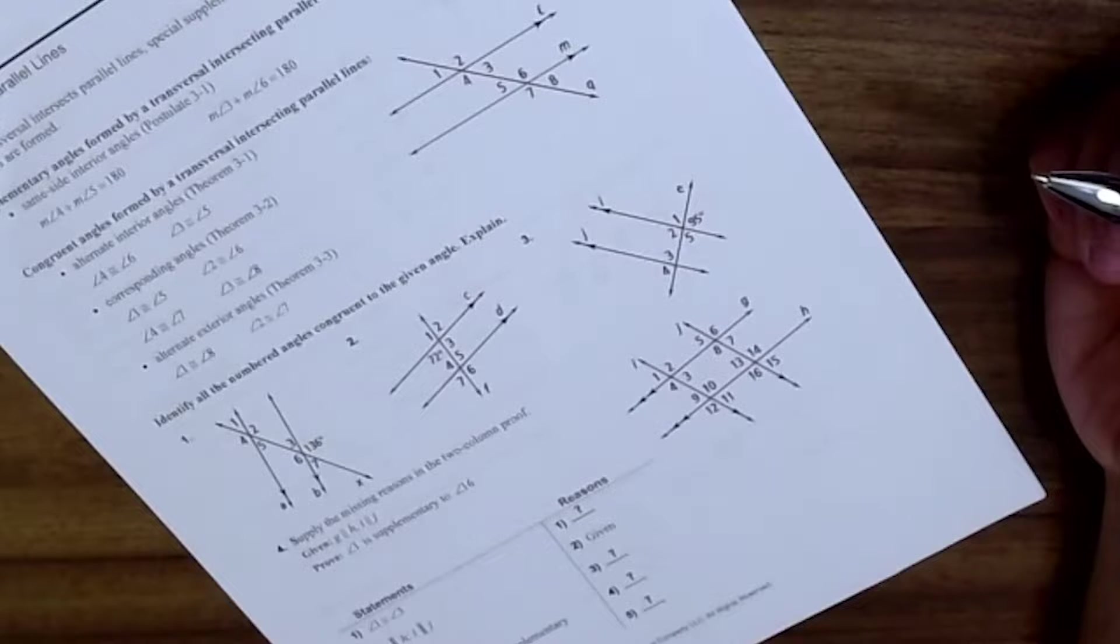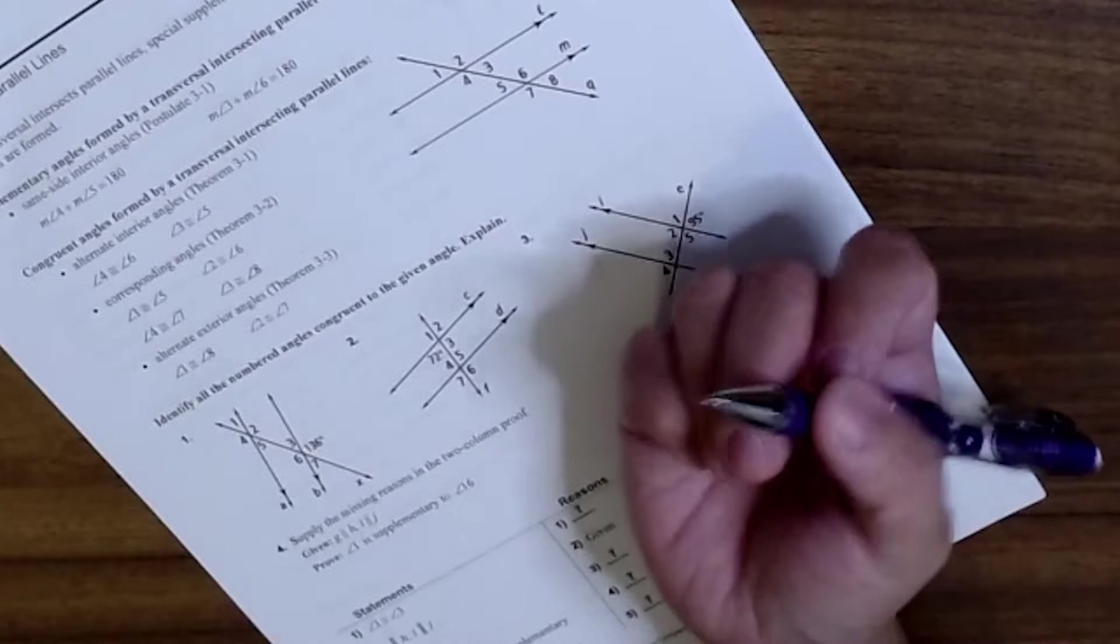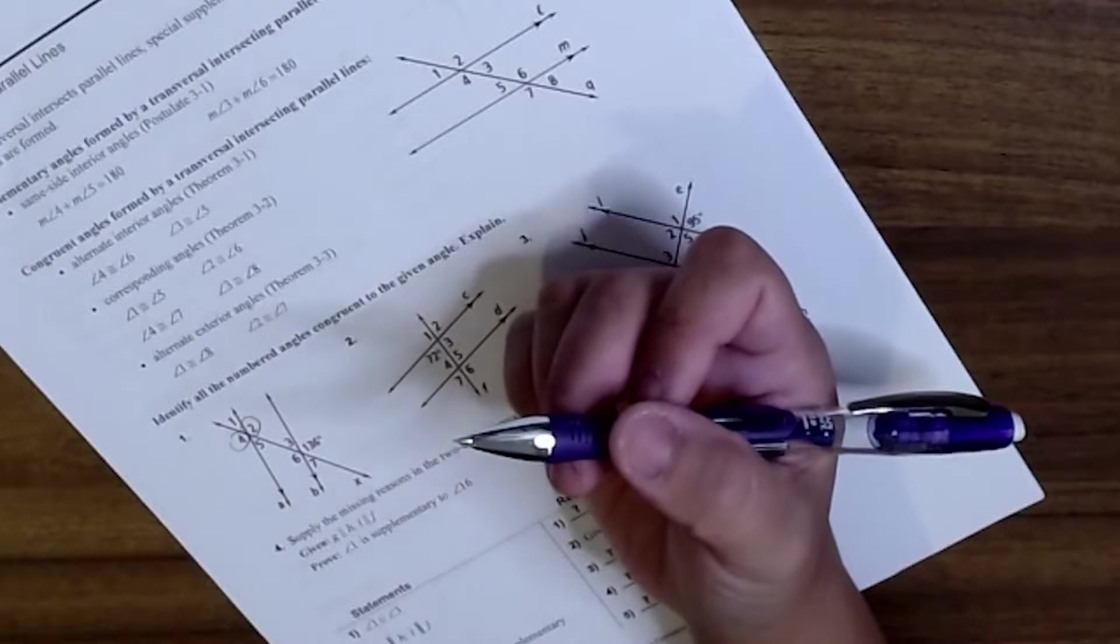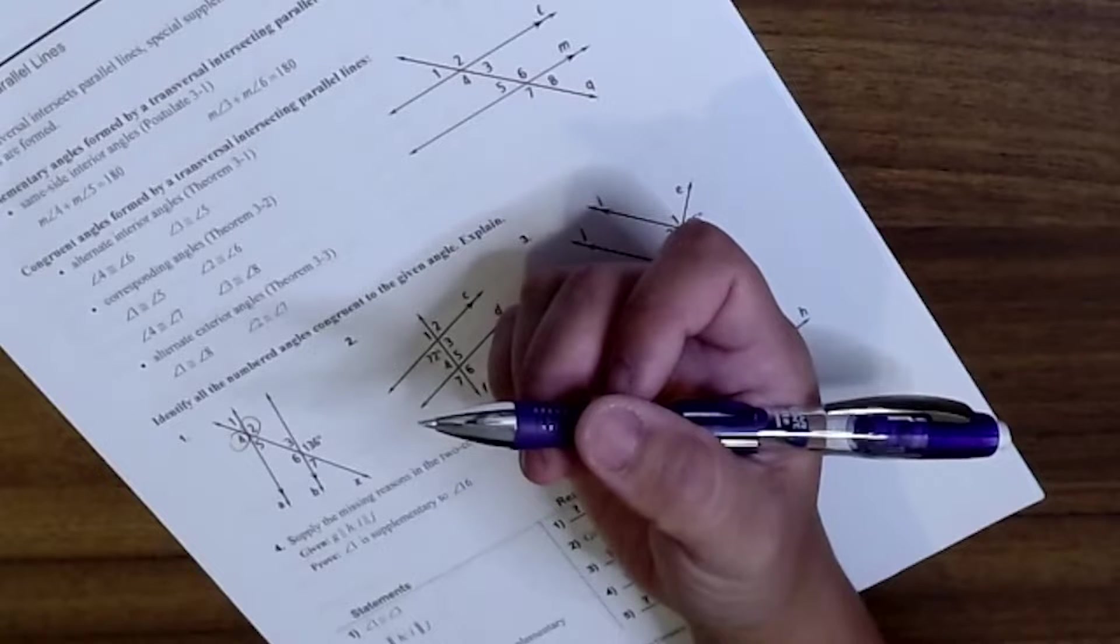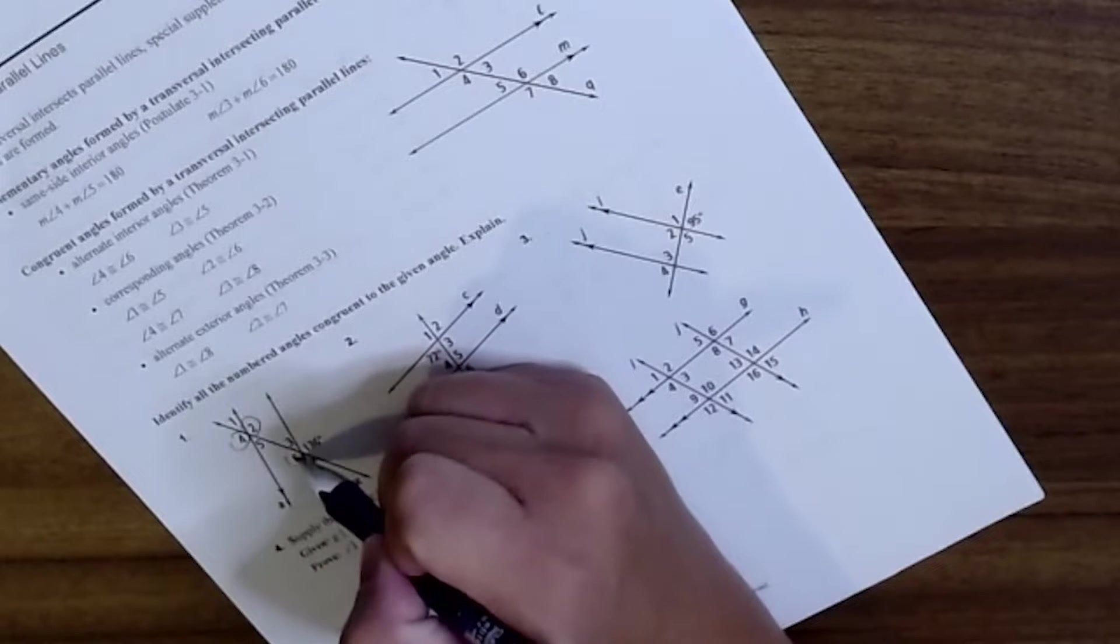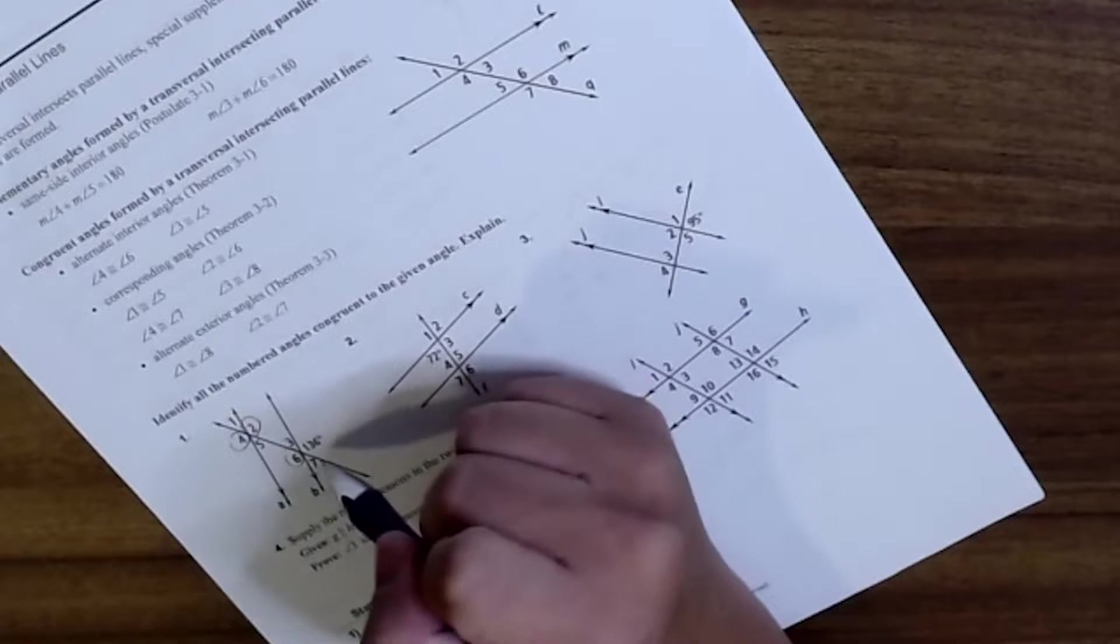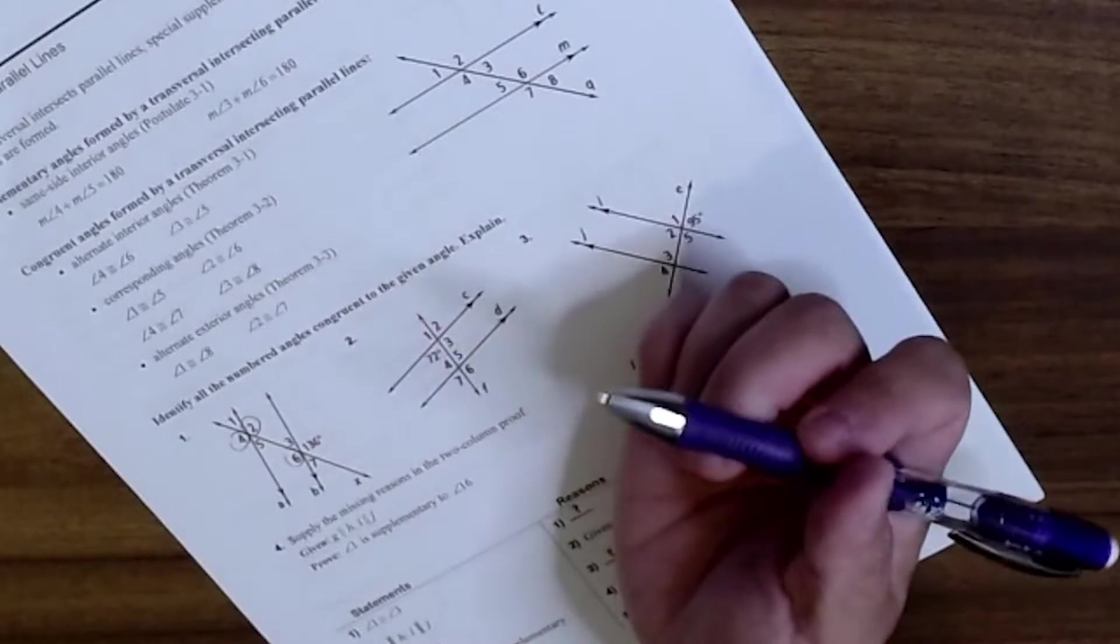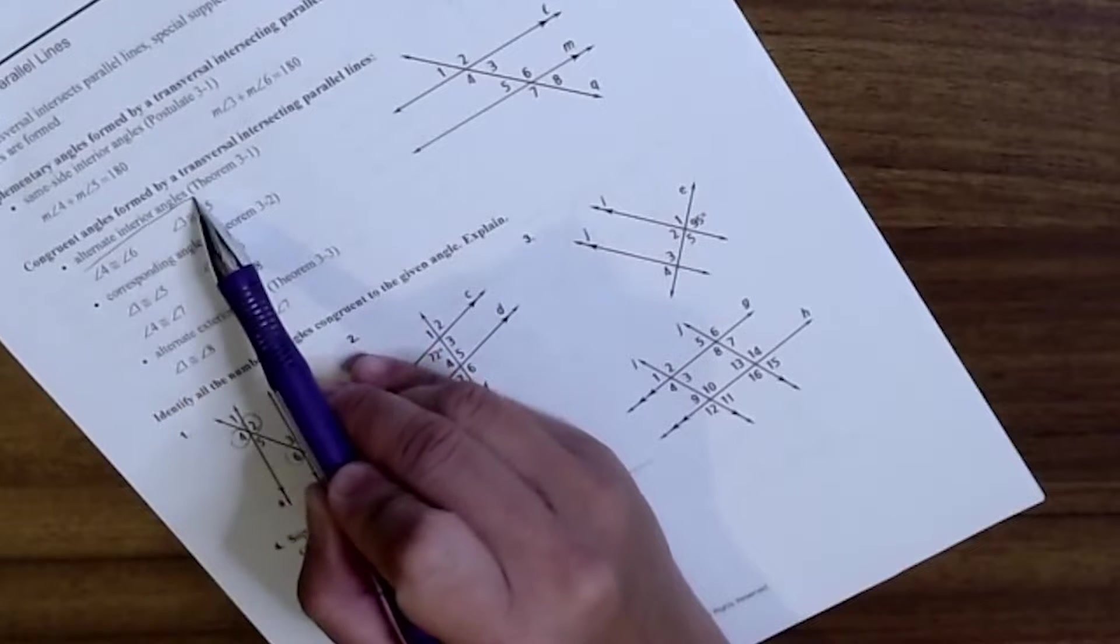Really all I'm trying to do is prove that angles are equal to each other. So like 2 and 4 are equal to each other because they are vertical angles, and then 6 is congruent here because 6 and 2 are alternate interior angles, and then 6 is congruent to 136. So there are alternate interior angles that are congruent.